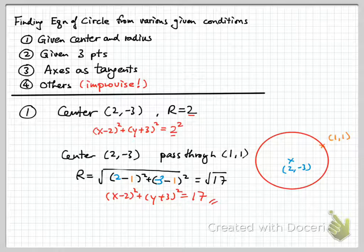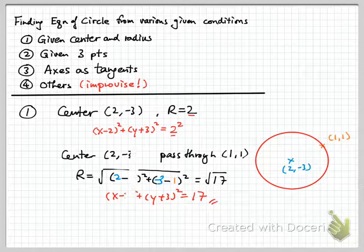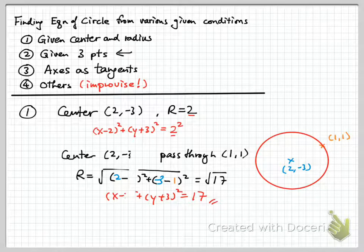This is the most straightforward approach — given the center and radius, either directly or indirectly. Sometimes you have to improvise based on different conditions, but this is the easiest case. Now, number two is more difficult. Sometimes you are given three points, and we use those three points to fix the circle. There is only one circle going through any three given points.